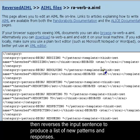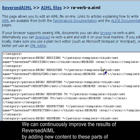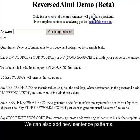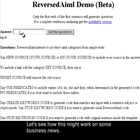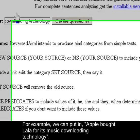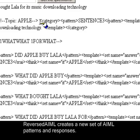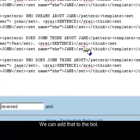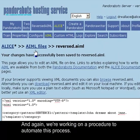We can continuously improve the results of Reversed AIML by adding new content to these parts of speech files. We can also add new sentence patterns. Let's see how this might work on some business news. For example, we can put in 'Apple bought Lala for its music downloading technology.' Reversed AIML creates a new set of AIML patterns and responses. We can add that to the bot, and again, we're working on a procedure to automate this process.